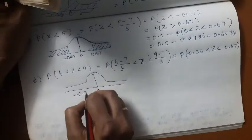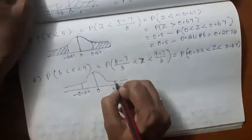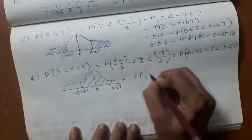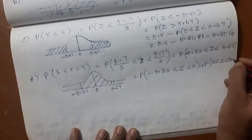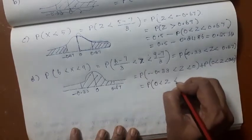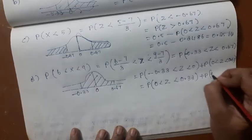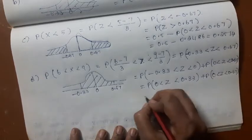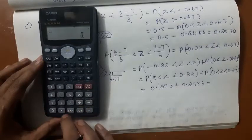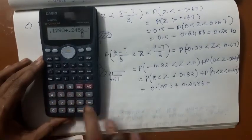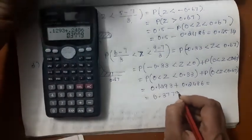This is 0, minus 0.33 is somewhere here and 0.67 is somewhere here, and you need the area between these two ordinates. This can be written as minus 0.33 less than Z less than 0 plus 0 less than Z less than 0.67. By symmetry, you can write it as 0 less than Z less than 0.33 plus probability of 0 less than Z less than 0.67. So let us have the area from the table: 0.33, 0.1293; 0.67, 0.2486. 0.1293 plus 0.2486 gives 0.3779.